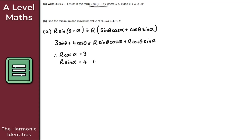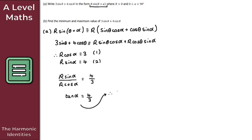Dividing equation 2 by equation 1: r·sin(α) / r·cos(α) = 4/3. The left-hand side simplifies to tan(α), so tan(α) = 4/3. Taking the inverse tangent of both sides, α = arctan(4/3). Using a calculator, that gives us α = 53.1 degrees.